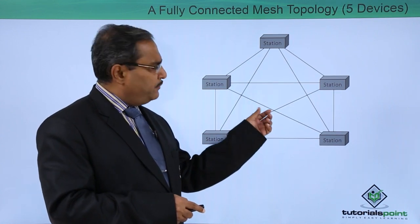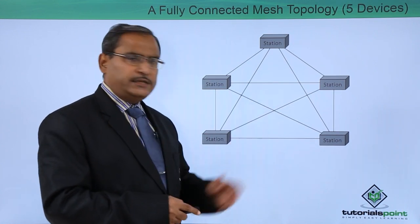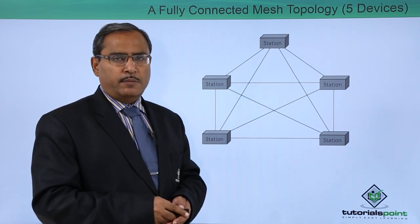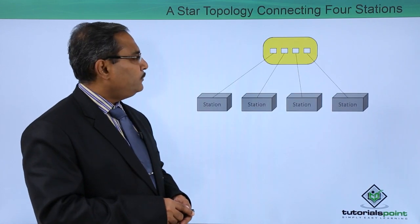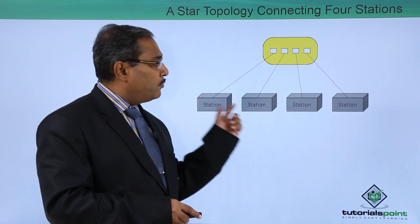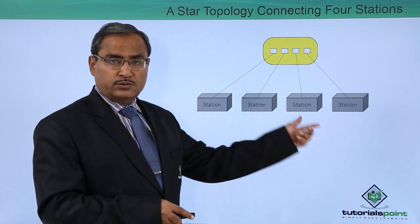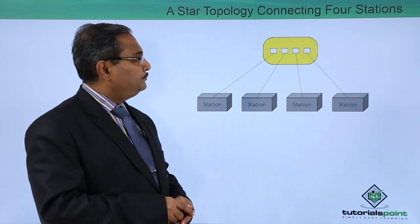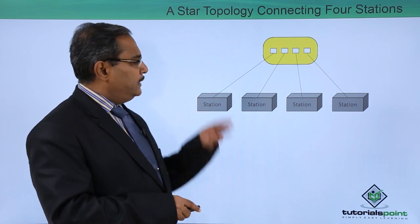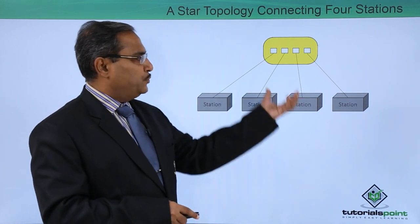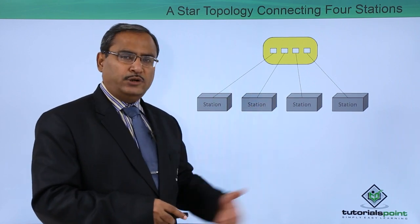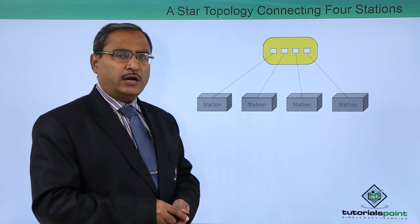If we delete some of the connections, we get a partially connected mesh topology. Next is our star topology connecting four stations — this is the star type. In some books, the arrangement may look different, but whatever the arrangement, it is the star topology.